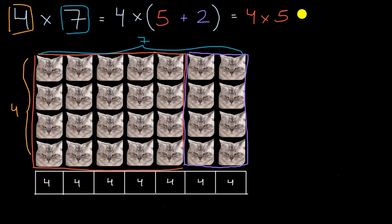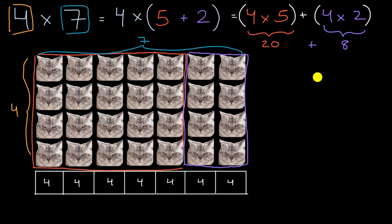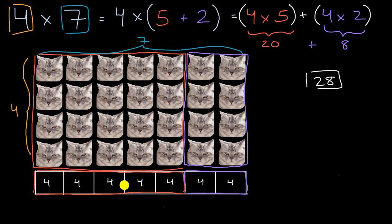That's equal to four times five — the first group of cat heads — plus four times two for the second group. Some folks might find four times five more straightforward; you can skip count: five, ten, fifteen, twenty. And four times two is eight. So this is just twenty plus eight, which equals twenty-eight. You can think about it the same way with the tape diagram: five fours plus two fours gives you four times seven.